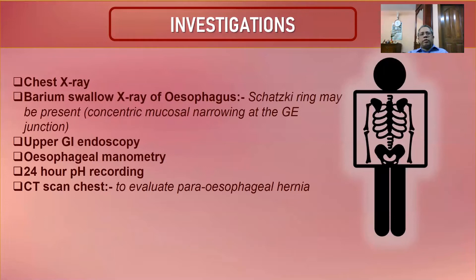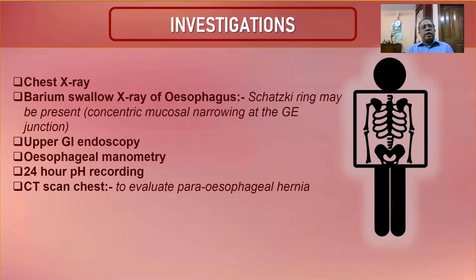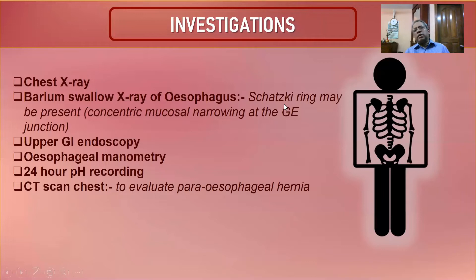Investigations include chest X-ray and barium swallow of the esophagus. On barium swallow, concentric mucosal narrowing at the gastroesophageal junction — known as Schatzki ring — may be present. Upper endoscopy is an important investigation, along with esophageal manometry, 24-hour pH recording, and CT scan of the chest to evaluate para-esophageal hernia.